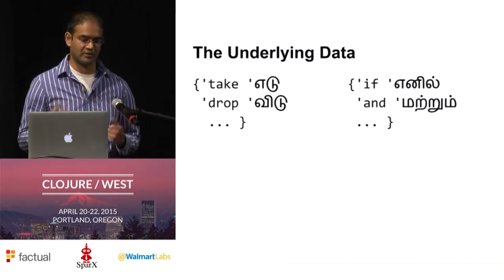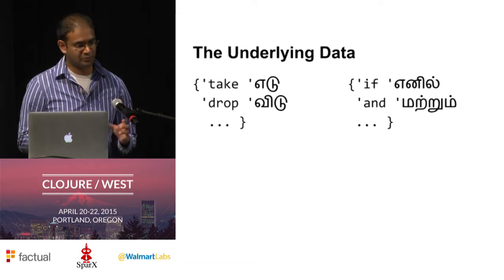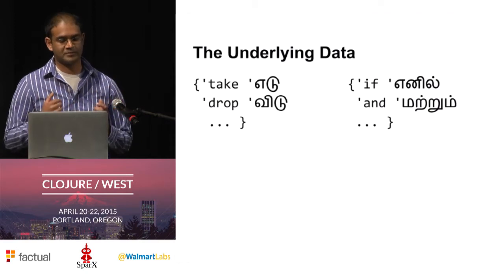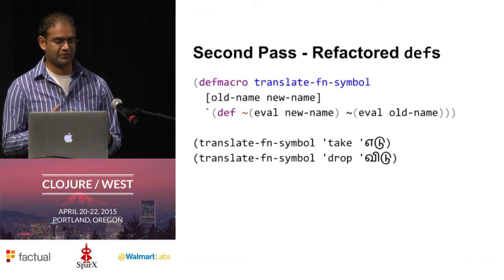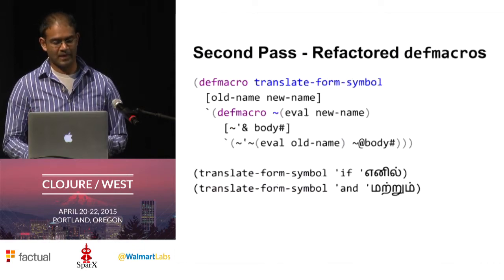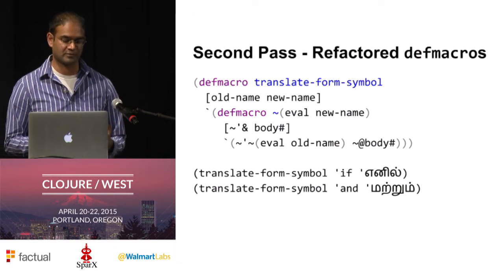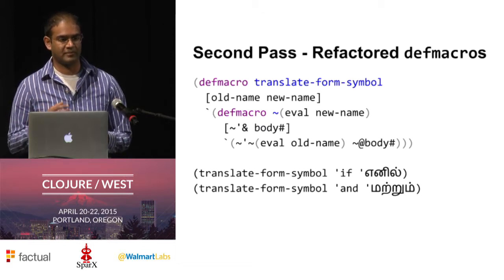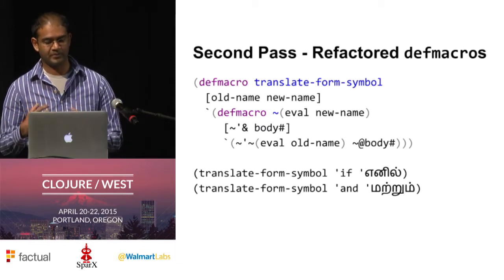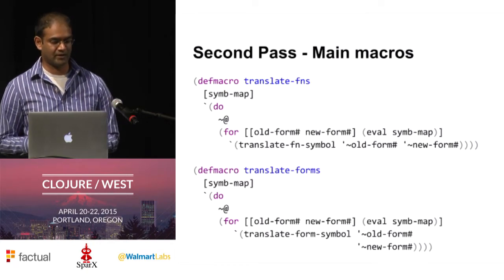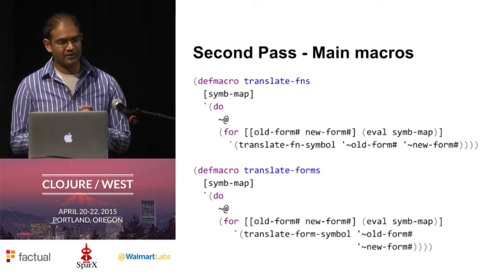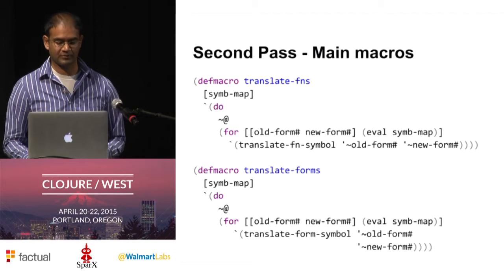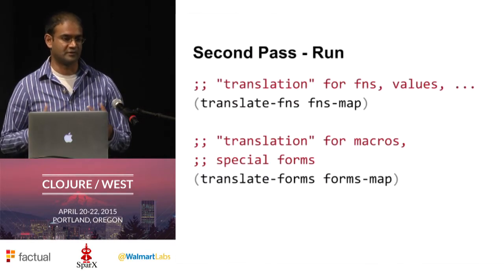What we need to do is take those macros we've created and convert them so they take symbols as input. Translate-form becomes translate-form-symbol, and translate-function becomes translate-function-symbol. Now that we have these helper macros, we still need main macros that take the original symbol map as input and call these helper macros. The symbol map comes in, and for every key-value entry pair in the map, it calls the helper macro and spits out the appropriate forms. Now that we have these main macros, all we need to do is call them and we're done.